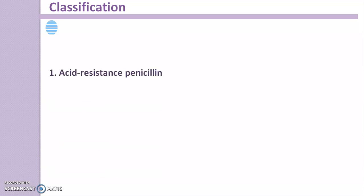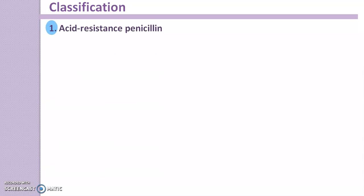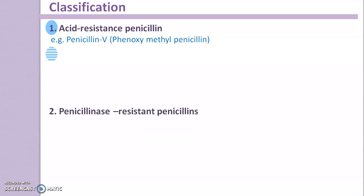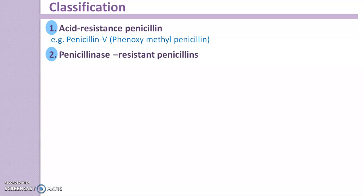Let's begin with the classification. The first class is acid-resistant penicillin. Example is penicillin V, chemically known as phenoxymethyl penicillin. These acid-resistant penicillins are stable in gastric juice.